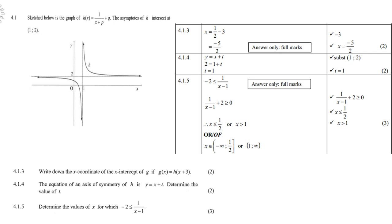For 4.1.4, substitute the intersection point (1, 2) into y = x + t: 2 = 1 + t, so t = 1. For 4.1.5, determine the values of x for which −2 ≤ 1/(x − 1). Transfer terms to get the inequality, and you find x < 1/2 or x > 1. In interval notation: x ∈ (−∞, 1/2] ∪ (1, +∞). Note you can never include infinity.